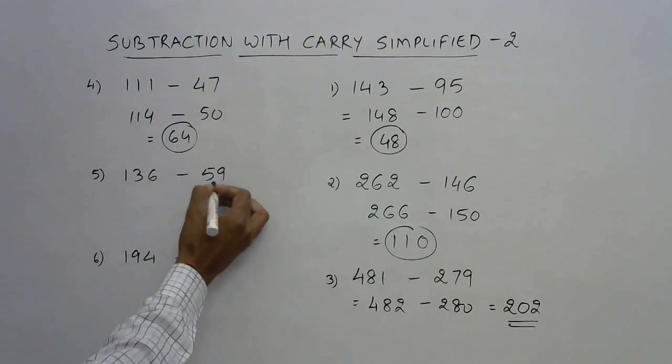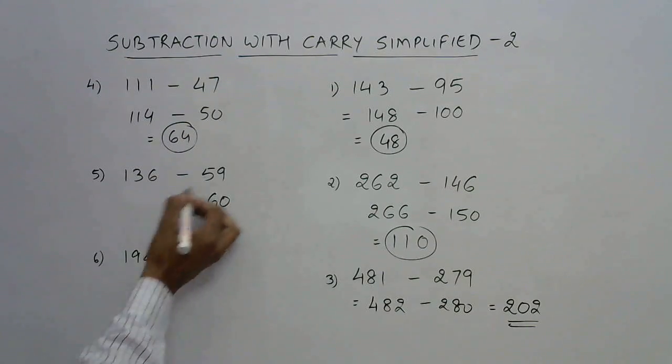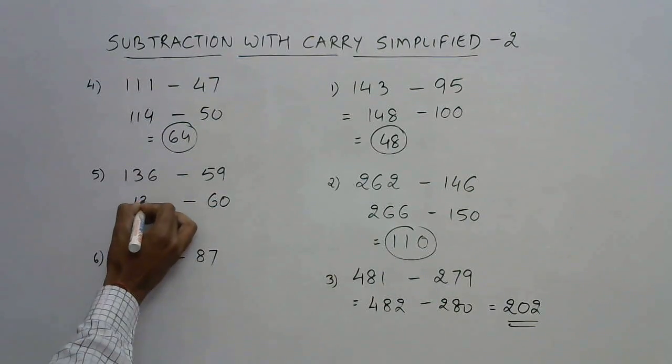This is very close to 60, so I have increased this by 1, so let's increase this also by 1. Now 13 minus 6 is 7, so 77 is the answer.